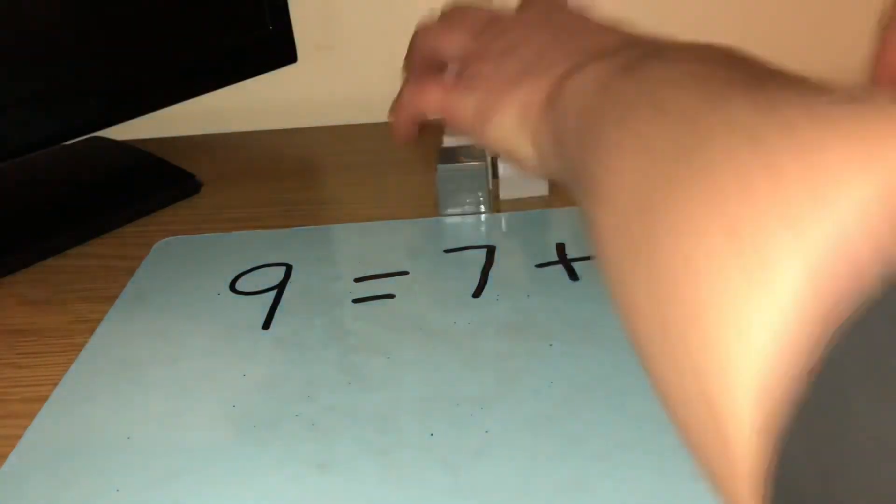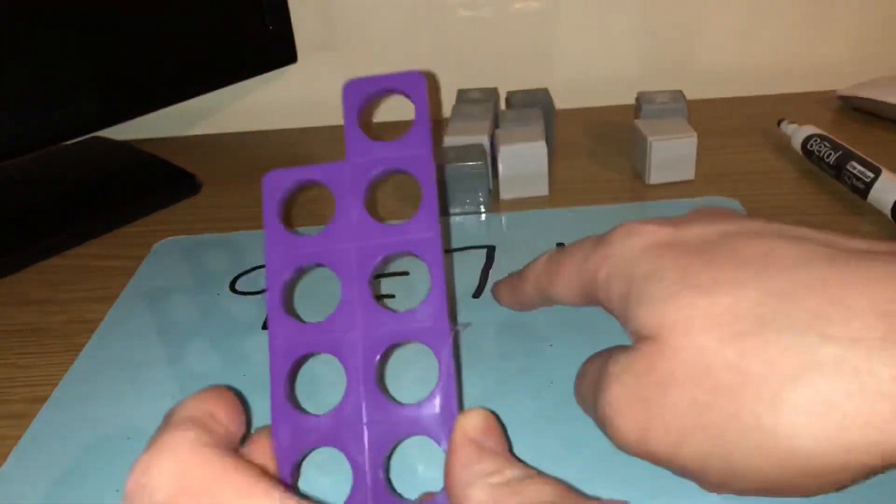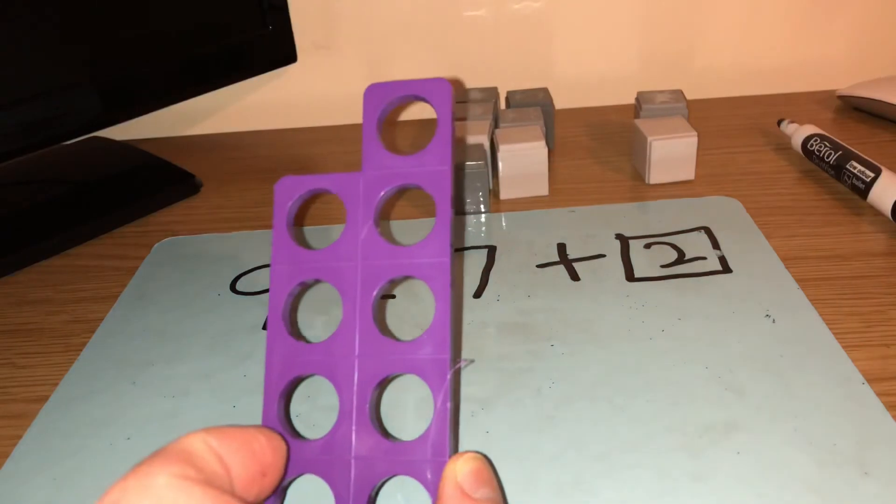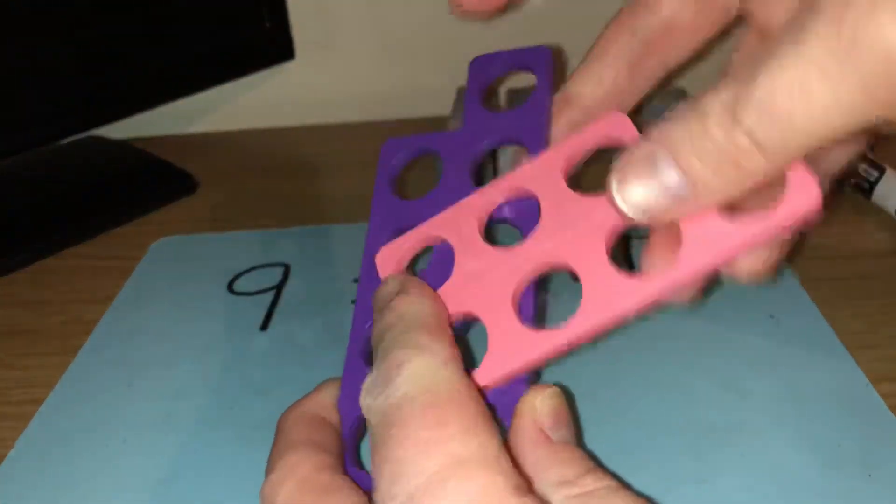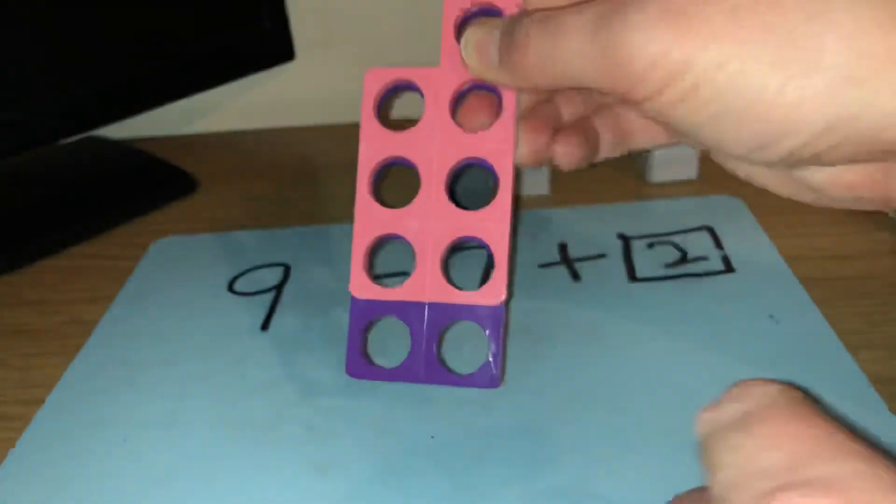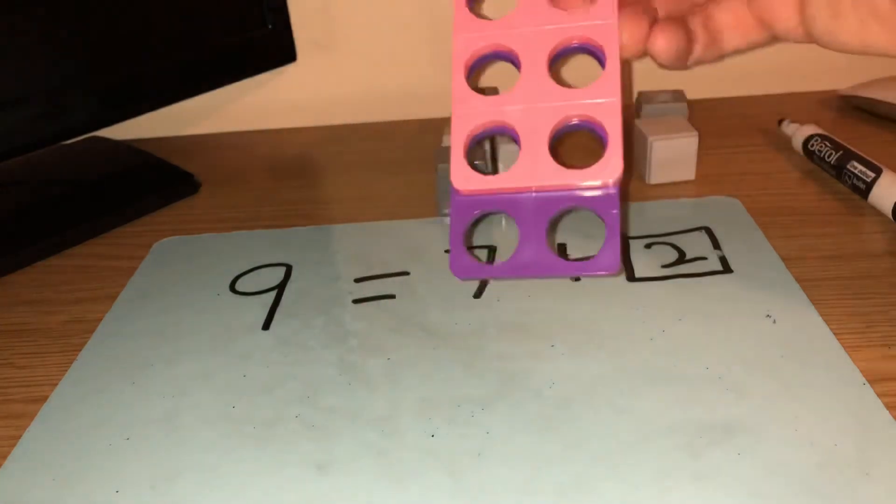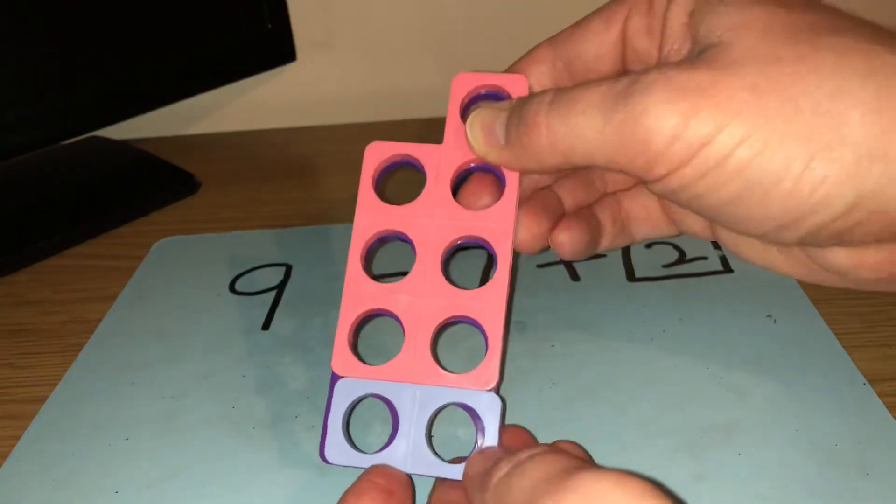So let me get my Numicon. Here's my number 9 again. There's 9. And we knew we had the number 7. Let's put this one over it. I'm going to line it up here to make it easy for me. Look, the missing part, the part we didn't have, was 2. So 7 and 2 makes 9.